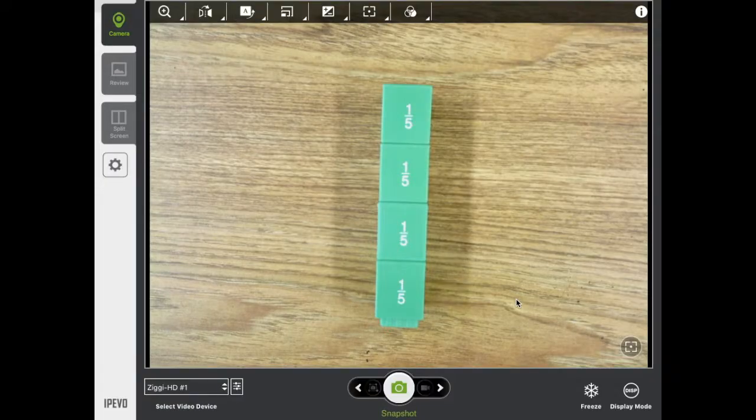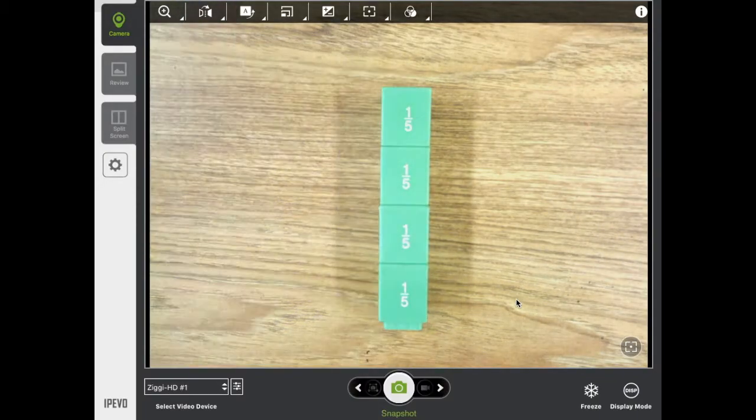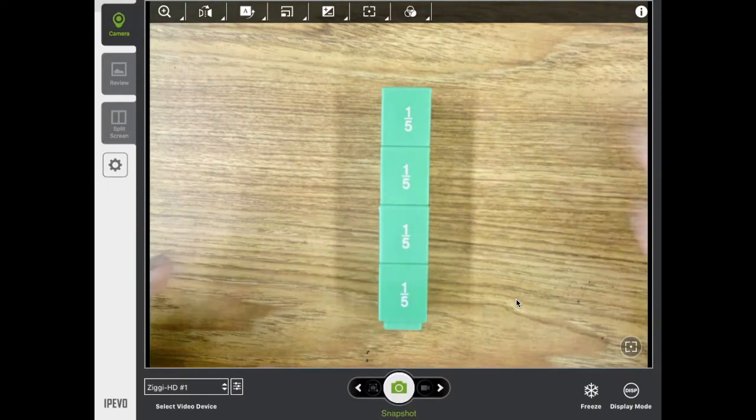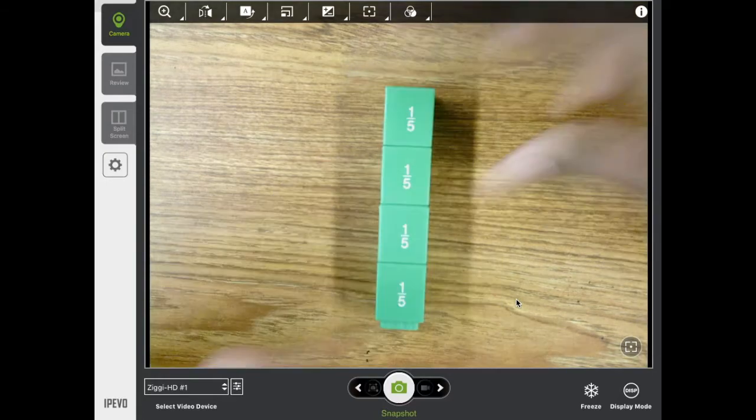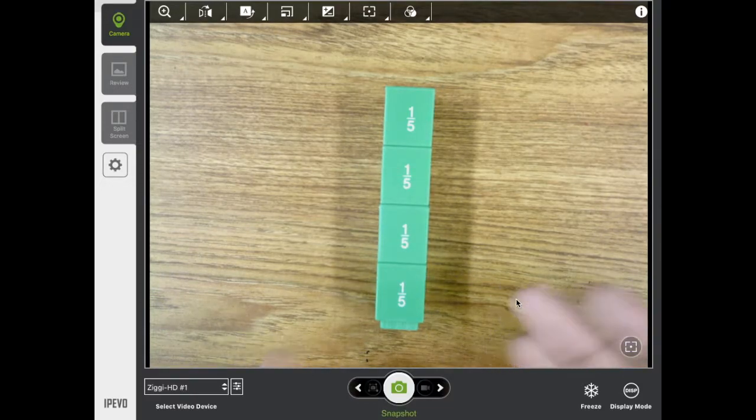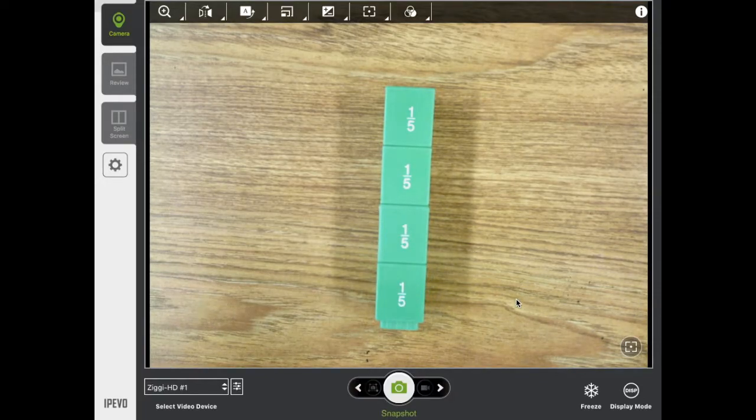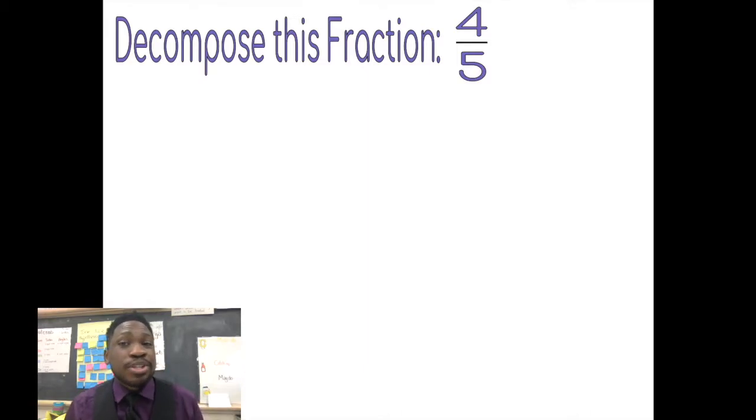So here we have the fraction four-fifths. I have one, two, three, four of these fifths. Using these blocks helps us decompose it because no matter how we break it apart, it'll be smaller parts that we could decompose it into. So look at this and think for a moment, how could you break this apart into smaller sections and still count all four pieces? How could you decompose that?